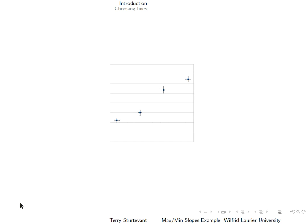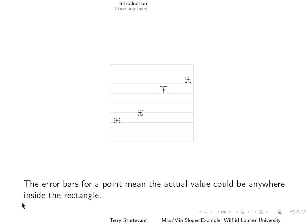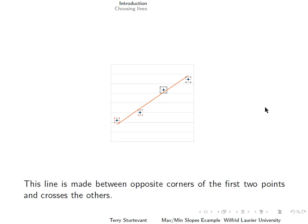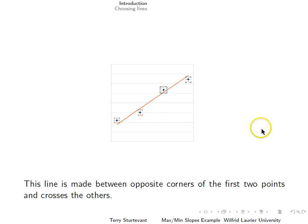Here's a graph with four points with error bars. Remember that the error bars for a point mean the actual value could be anywhere inside this little rectangle. If we speak of a line that crosses the error bars, what we mean is that it actually touches each of the rectangles for each of the points. This line is made between the opposite corners of the first two points and it crosses the rectangles of the others. The first two points are highlighted in red to show that these are the points that the line is made to connect.